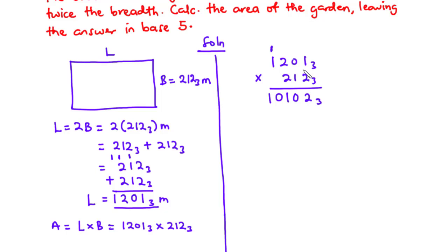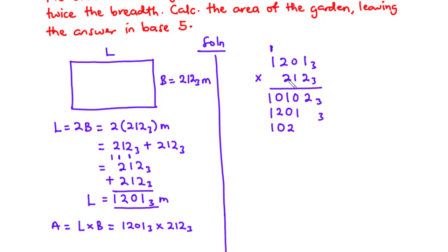For the tens digit 1: 1 times 1 is 1, 1 times 0 is 0, 1 times 2 is 2, and 1 times 1 is 1, giving partial product 1201 base 3 shifted one place. For the hundreds digit 2: 2 times 1 is 2, 2 times 0 is 0, 2 times 2 is 4; 4 divided by 3 is 1 remainder 1, carry 1. 2 times 1 is 2, plus 1 is 3; write 0, carry 1.